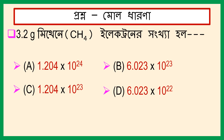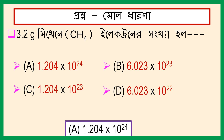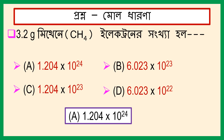Uttorti holo A: 1.204 into 10 to the power 24.